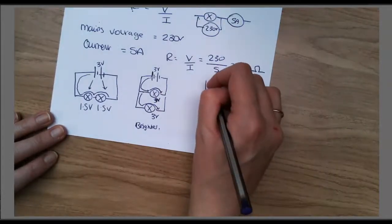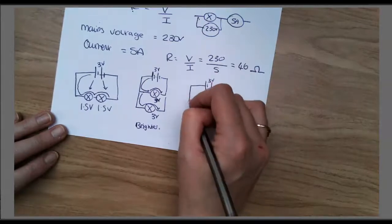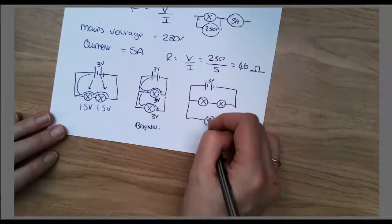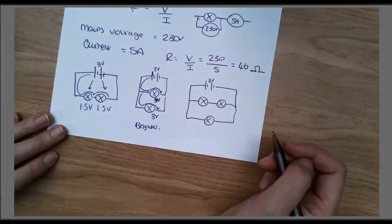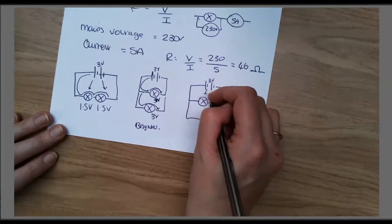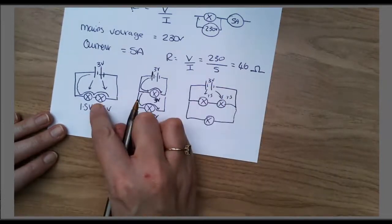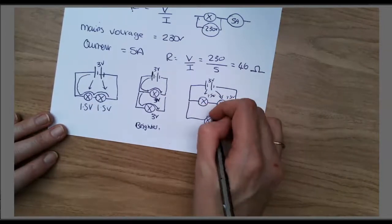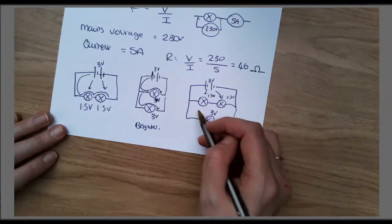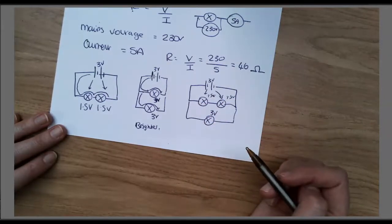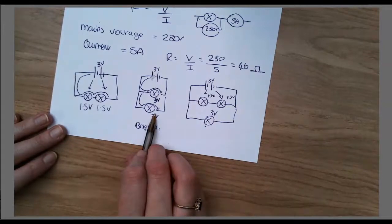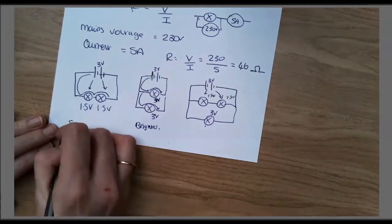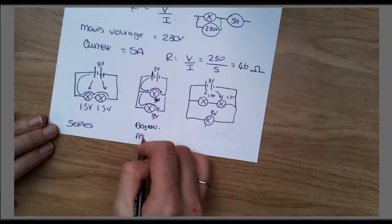I'll do a bit of a hybrid. This has got a series element and a parallel element. These two bulbs get 1.5 each because they've shared it, so they'll be quite dim. But this bulb here will get 3 volts, so it will be quite bright because it's on its own. This bulb will be as bright as these ones and this bulb will be as bright as these ones. Remember this is a series circuit and this is a parallel circuit.